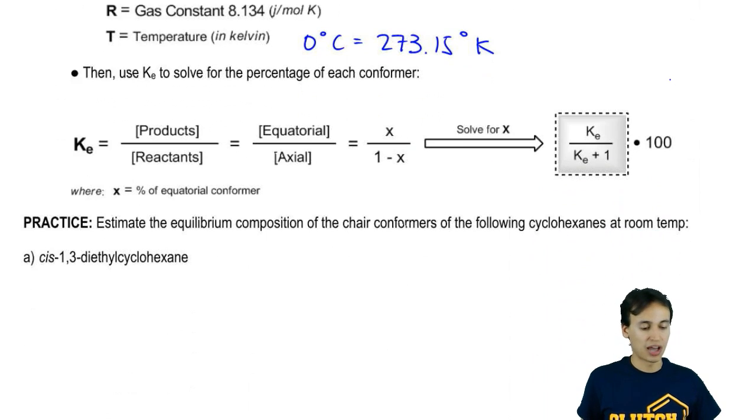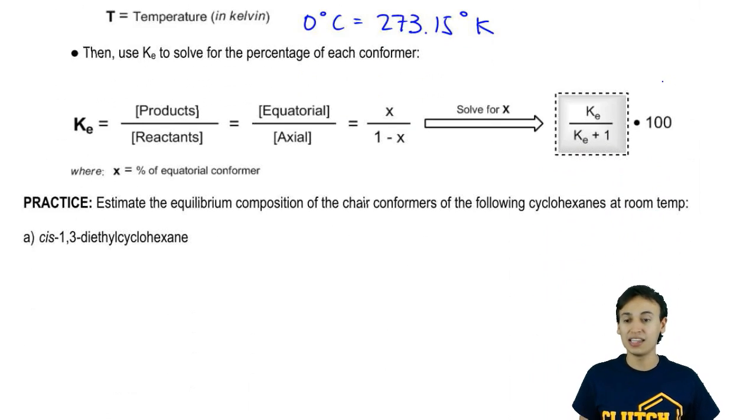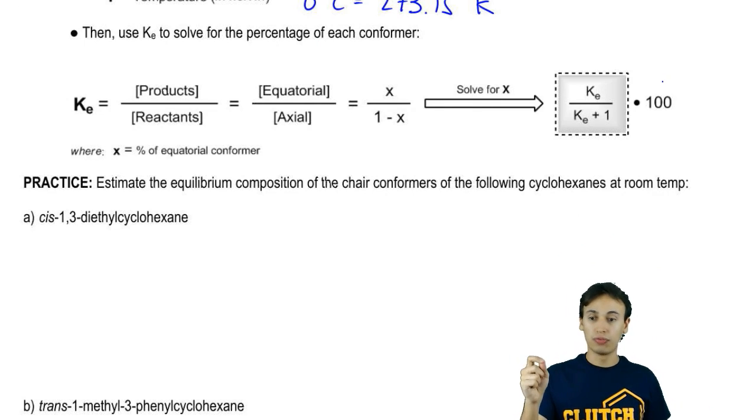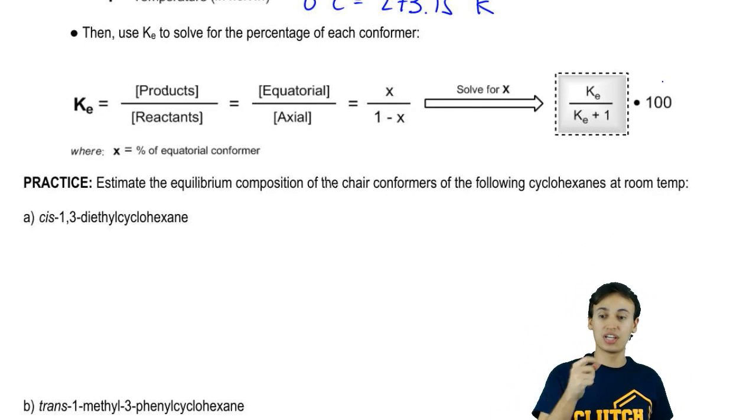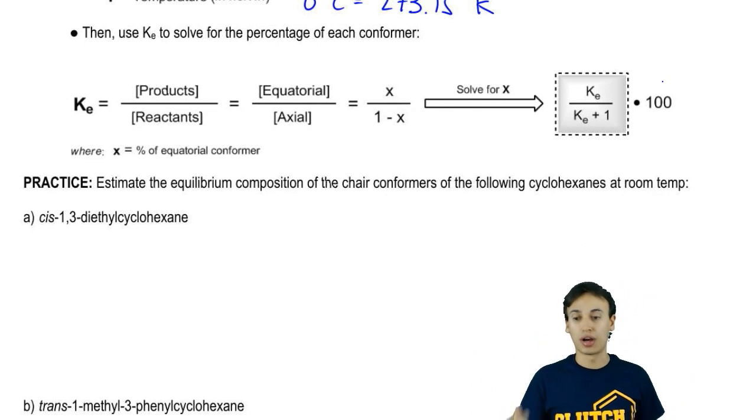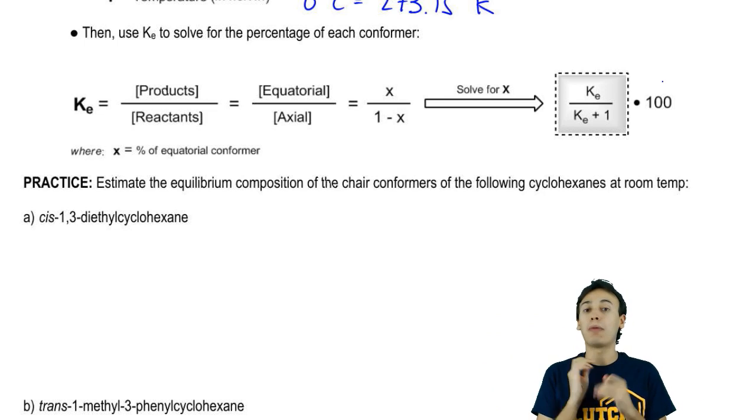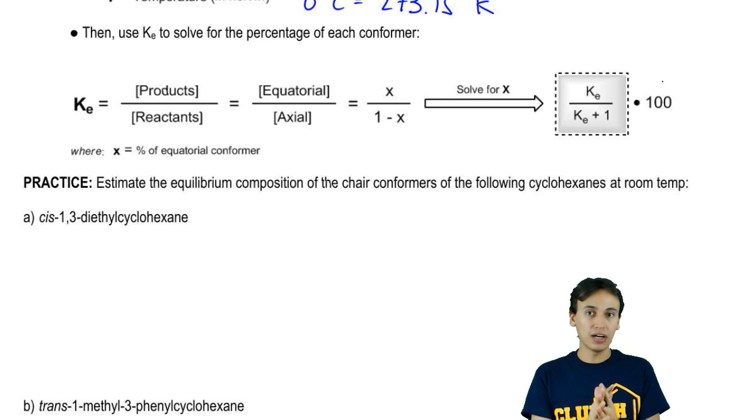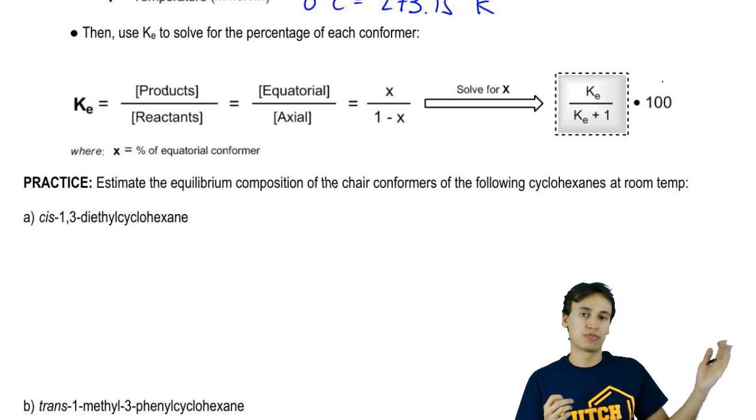So then over here, what we have is that then we get that KE and now we can solve for the percentages using the definition, products over reactants. Once we get that positive KE number, that positive KE number means that we're actually going towards the favored direction.